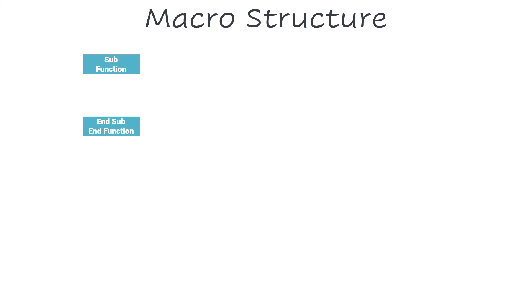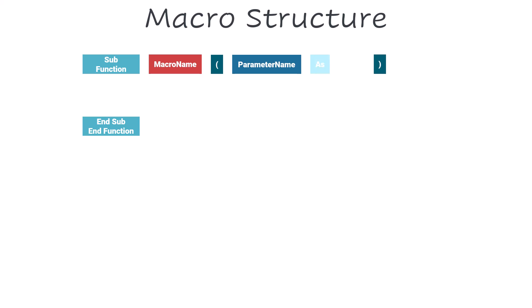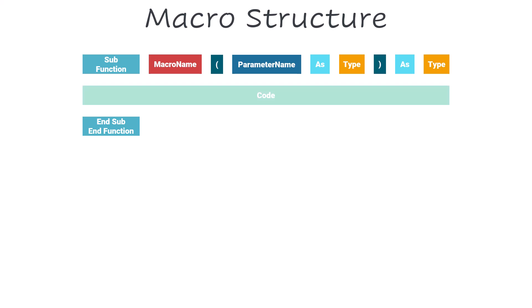Let's look at the structure of a macro. We first set sub or function depending on whether we have an output. At the end we close the macro with end sub or end function. After sub or function we set the macro name. After that we add brackets for input parameters — if we don't have parameters, we leave them empty. To add a parameter, we set a name for it, then write 'as' followed by the type, such as integer or string. Only function macros can have an output — we set it after the brackets by writing 'as' and then the output type. The most important part is the body, where we write the macro code.